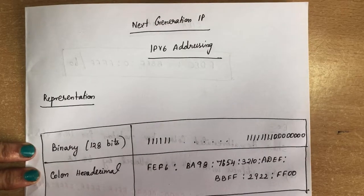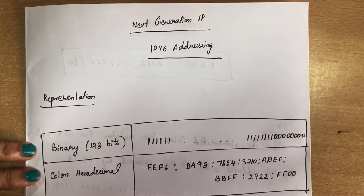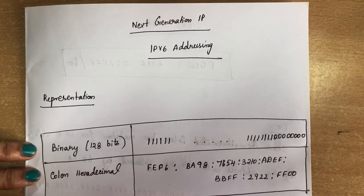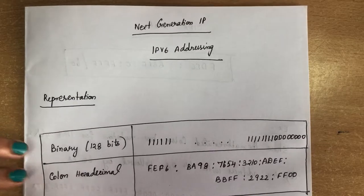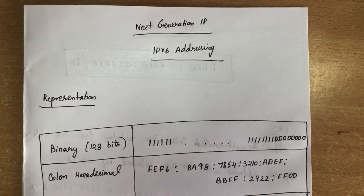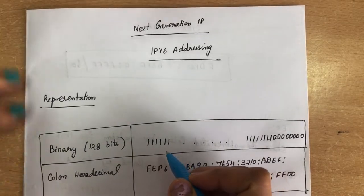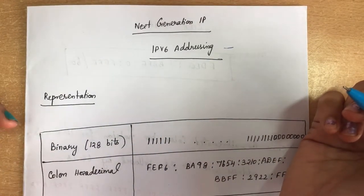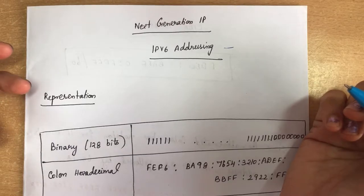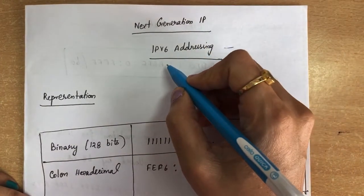Today we are going to see a new topic: IP version 6 and IP version 6 addressing. This comes under the third unit of computer networks. IP version 6 is the latest version of internet protocol. Using IP version 6, you can easily identify devices across the internet. When you want to identify any device on the internet, you will use a unique address called an IP version 6 address.